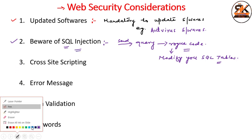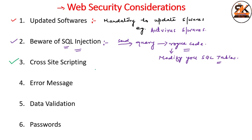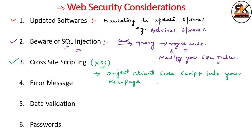Next, you have cross-site scripting, denoted by XSS. Cross-site scripting allows attackers to inject client-side scripts into your web pages. An example of such an attack is the submission of forms — an attacker can submit their script through a form or upload a script that somehow gets executed on your website, which can infect your website. This is also an attack that should be avoided.